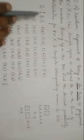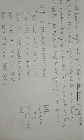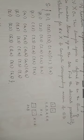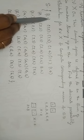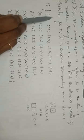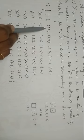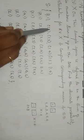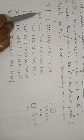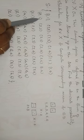After finding the sample space, we write the random variable X, which is the sum of the two numbers turning up. For outcome (1,1), X equals 2. For (1,2), X equals 1 plus 2 equals 3. For (1,3), X equals 1 plus 3 equals 4.